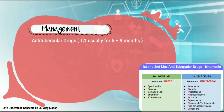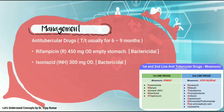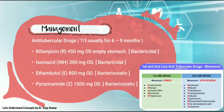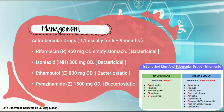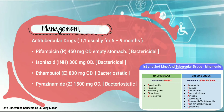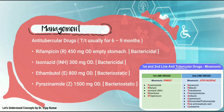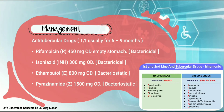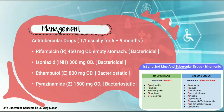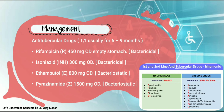Management: antitubercular drug treatment usually for 6 to 9 months. Rifampicin 450 mg once a day on an empty stomach — it is bactericidal. Isoniazid 300 mg once a day — it is bactericidal. Ethambutol 800 mg once a day — it is bacteriostatic. Pyrazinamide 1500 mg once a day — it is bacteriostatic.